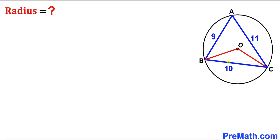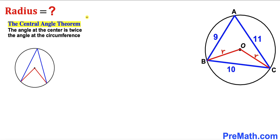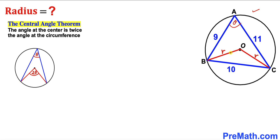I'm going to show you the step-by-step proof, so please watch the video till the very end. In our first step, I have connected the center O with vertices B and C. We can see OB and OC are the radii of this circle, so I'm going to label them with lowercase r. Now let's recall the central angle theorem: the angle at the center is twice the angle at the circumference. If this angle at the circumference is theta, then this angle at the center is going to be two times theta.